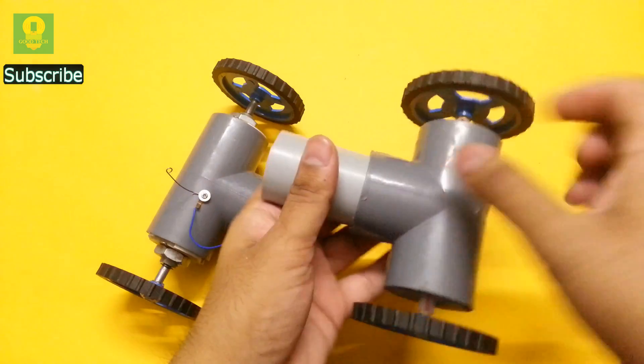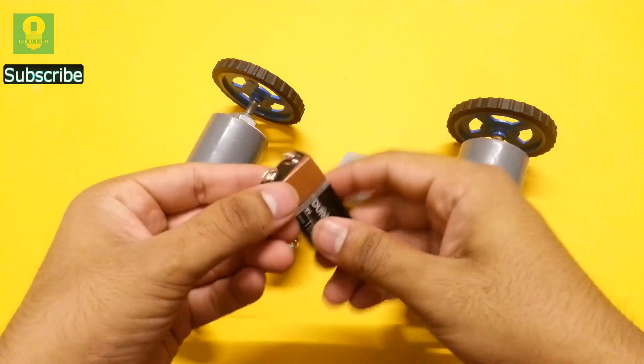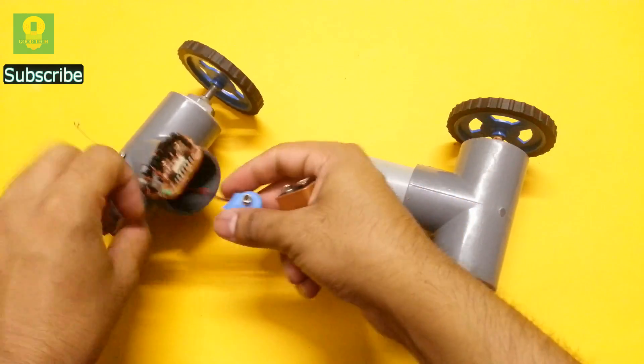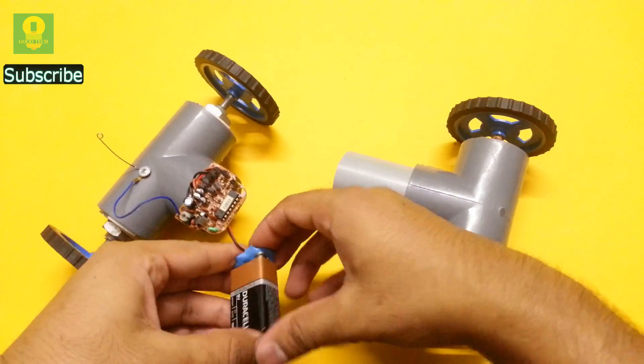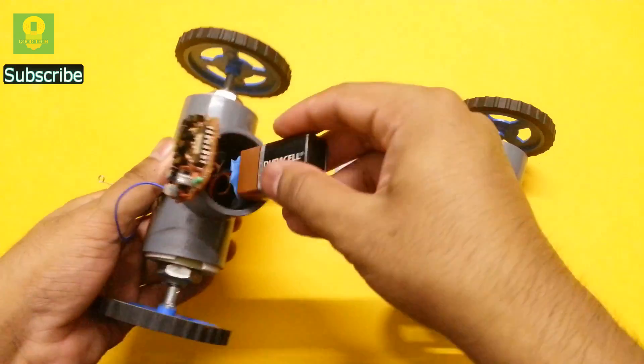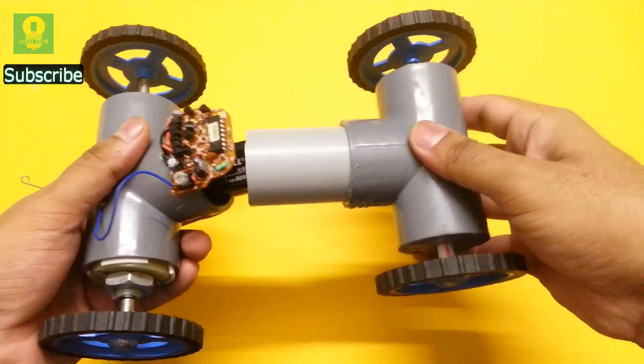Take the front part of the car and a 9V battery. Connect the 9V battery to the circuit. Insert the battery inside and assemble the car.